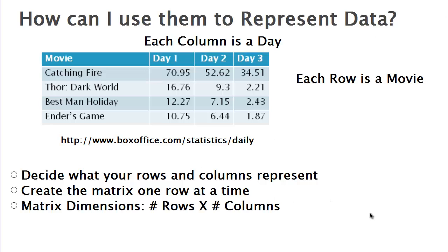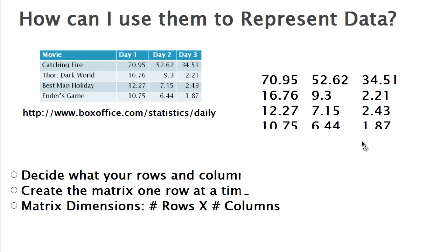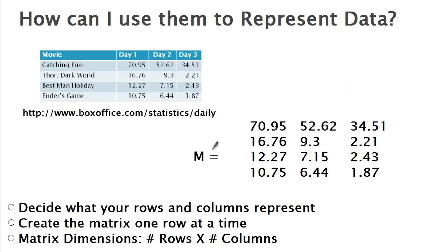So we create the matrix one row at a time: first the Catching Fire data, then Thor Dark World data, then Best Man Holiday data, and finally Ender's Game data. We now have created our matrix one row at a time. We're going to call our matrix M — capital M — because it's movie data. Matrices have brackets on them, so we set M equal to the matrix you see there.